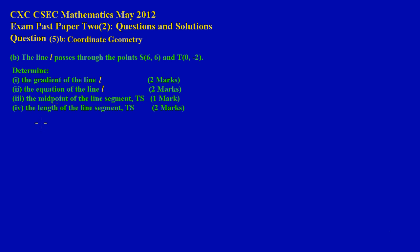Note that the gradient is the same as M — that's just the letter we use to identify the gradient. We have a worded problem and we're asked to find: the gradient in part 1, the equation of the line in part 2, the midpoint of the line in part 3, and the length of the line in part 4. We can calculate all of these algebraically.